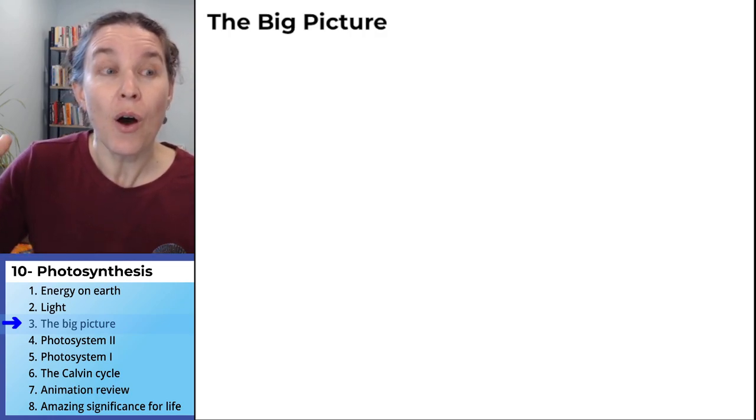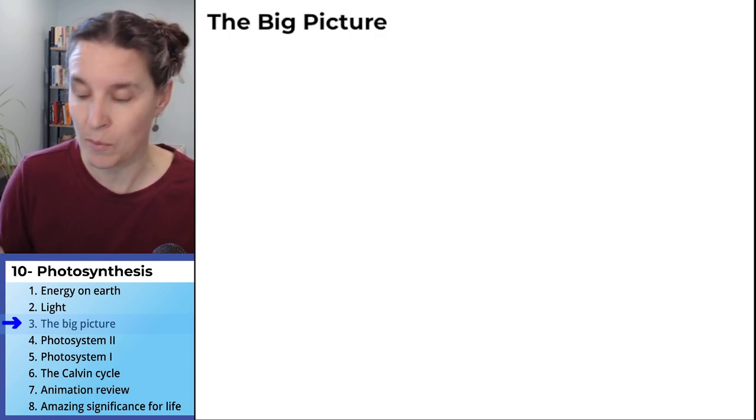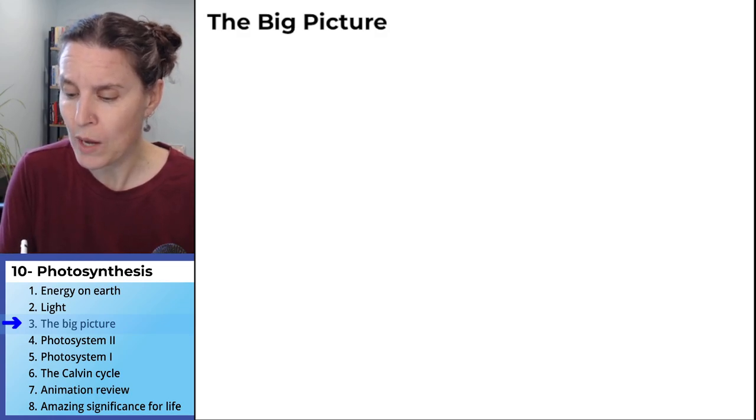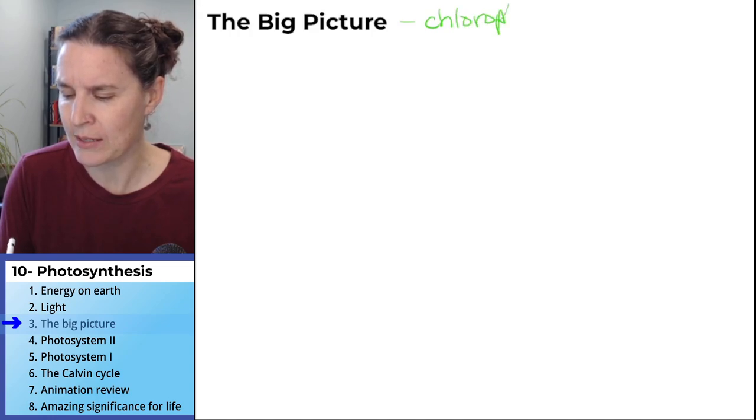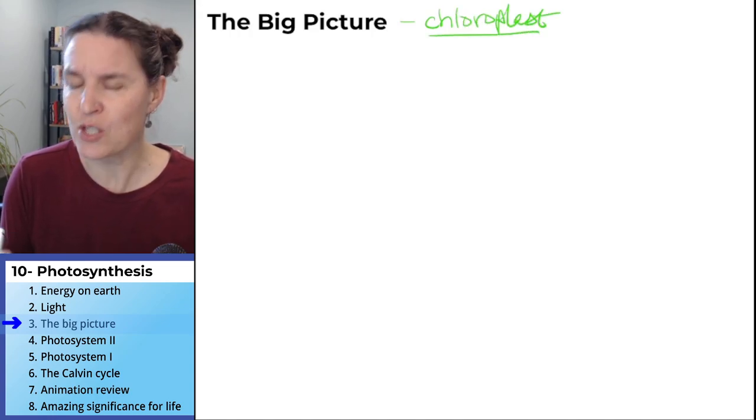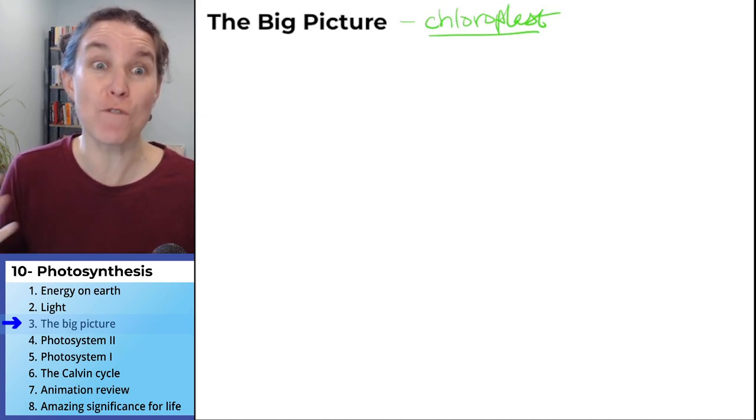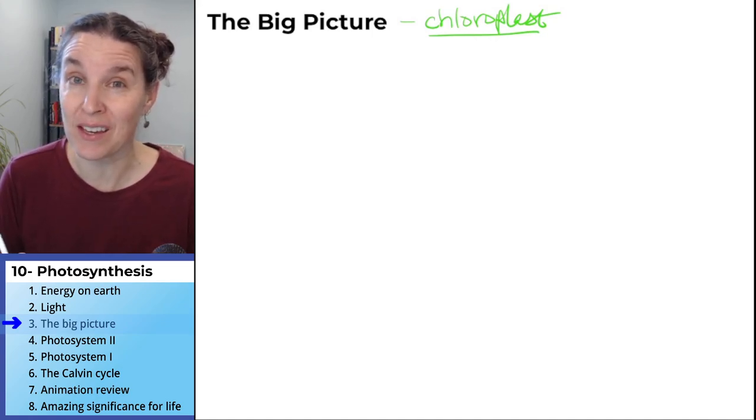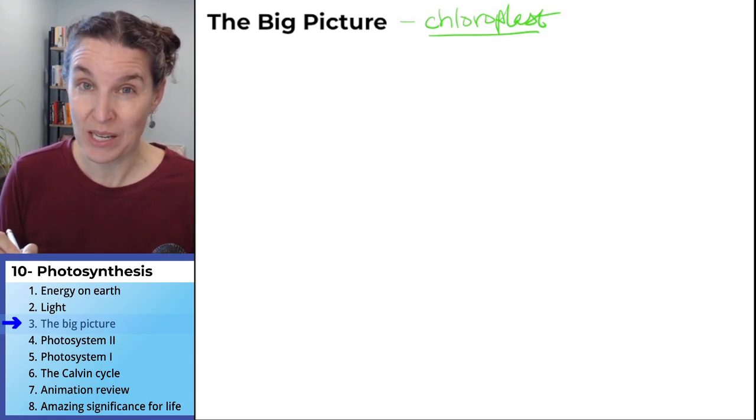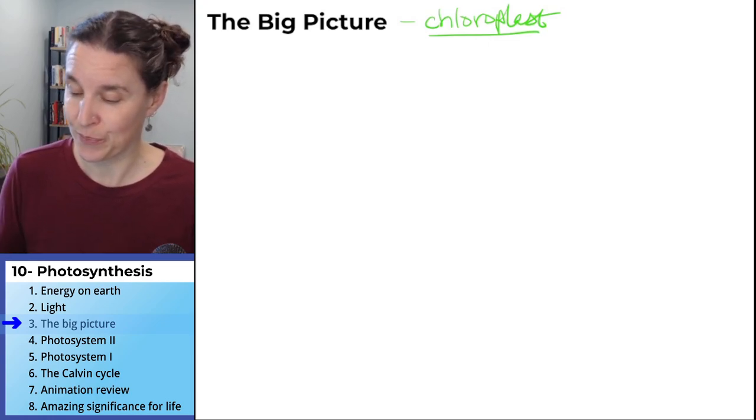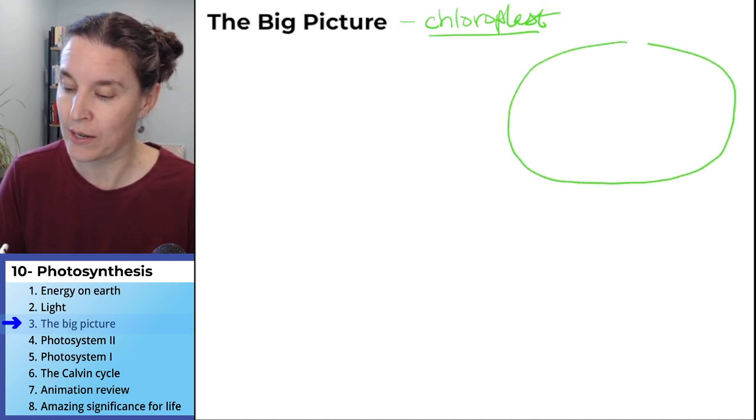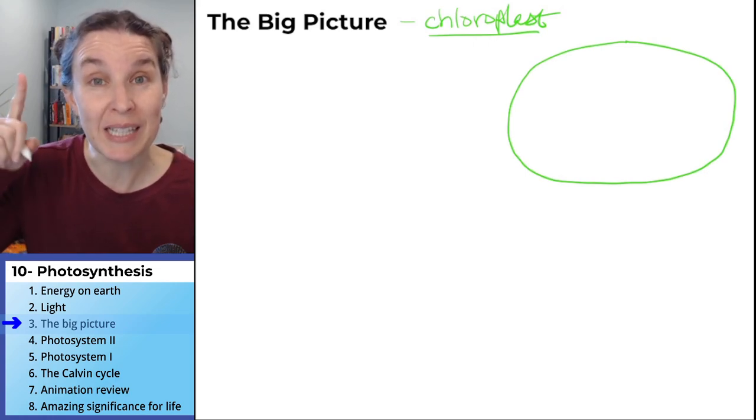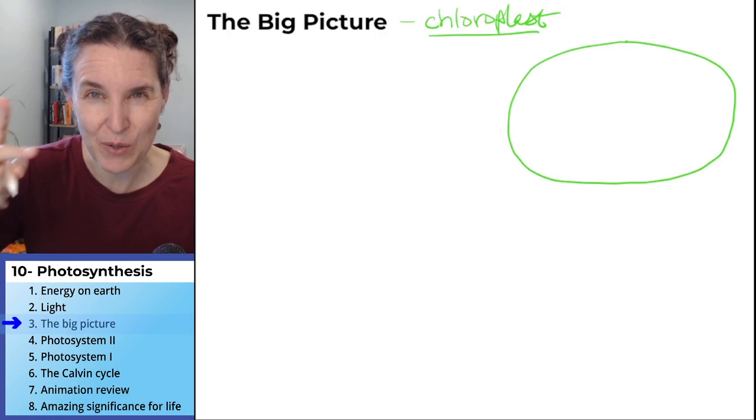In our eukaryote, all of the photosynthesis stuff happens in the chloroplast. So let's go ahead and define or draw chloroplast anatomy first as the first part of our big picture, since everything that we need to know is happening inside this structure. The chloroplast is a membrane-bound organelle found in plants and plant-like protists.